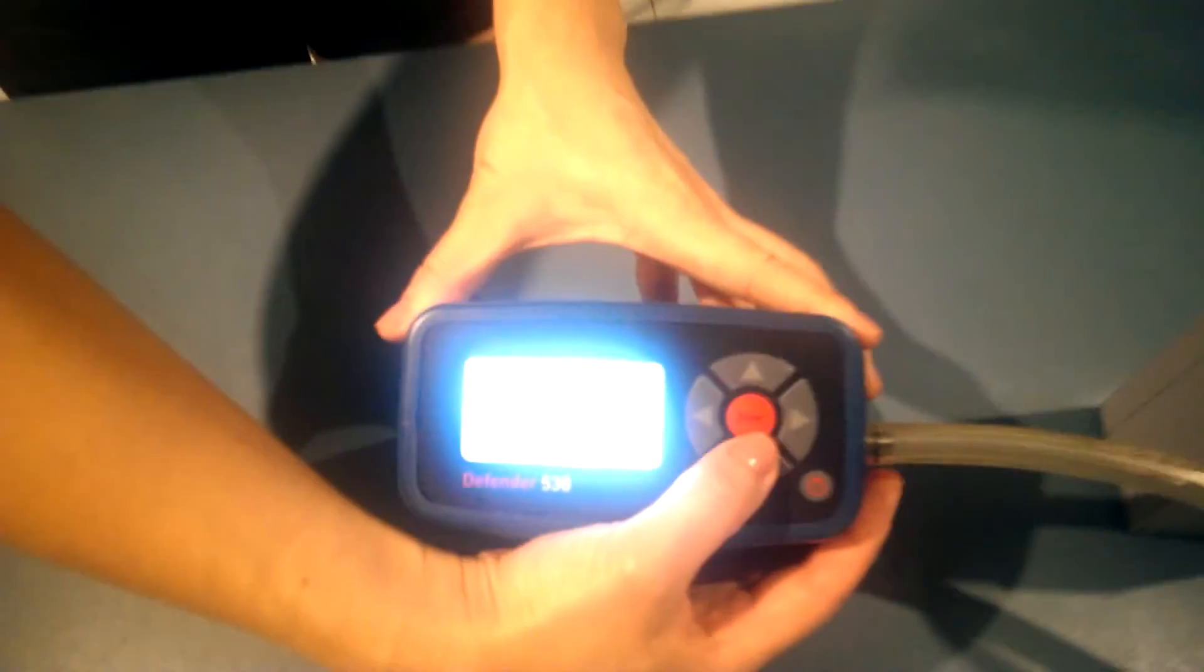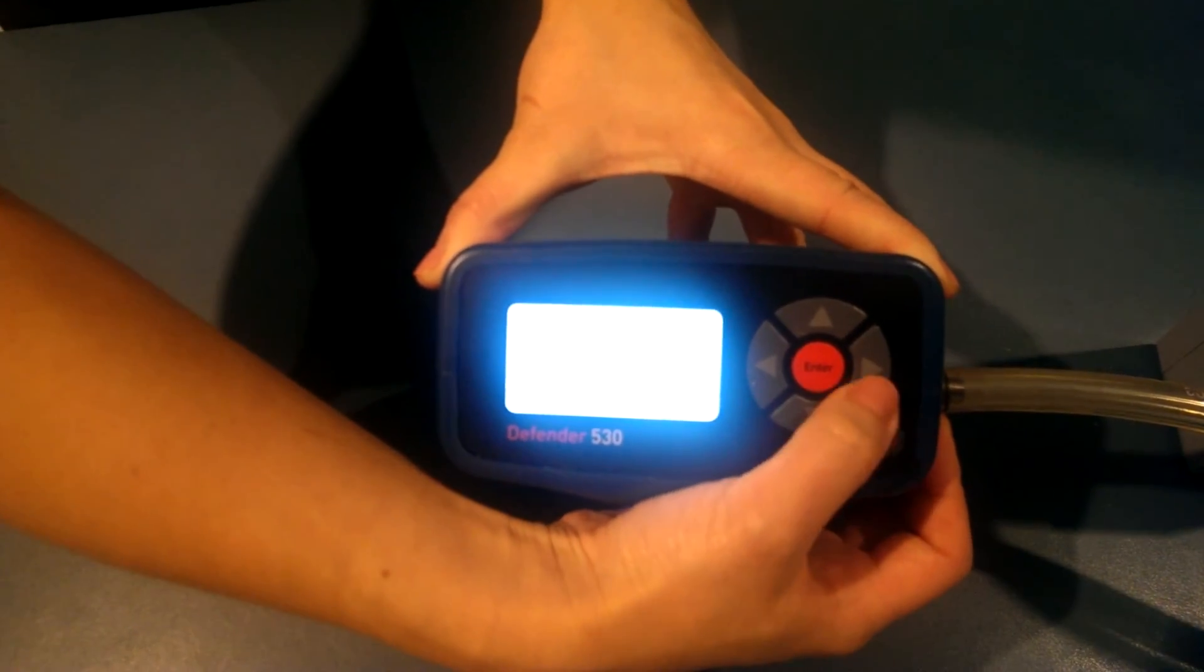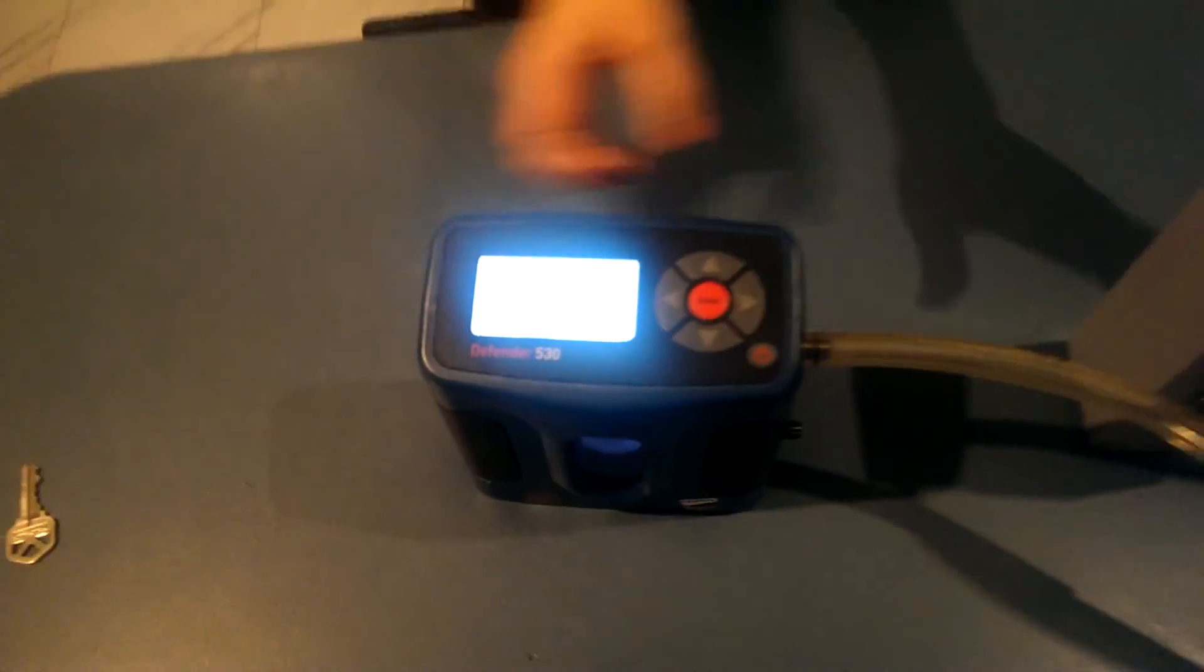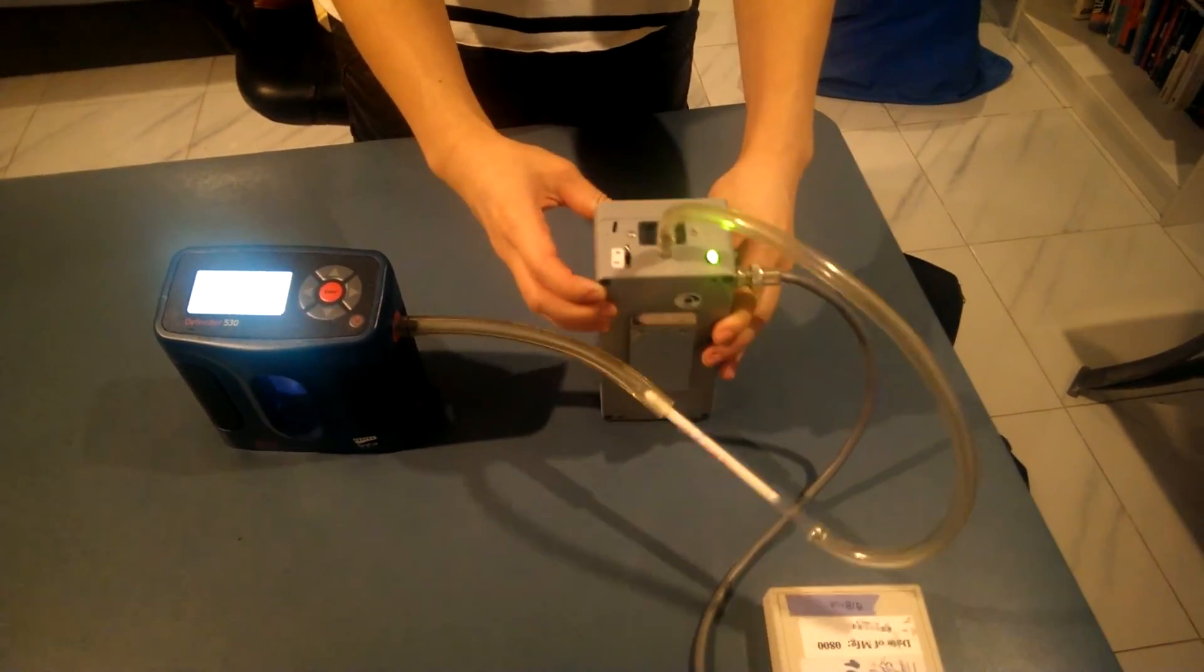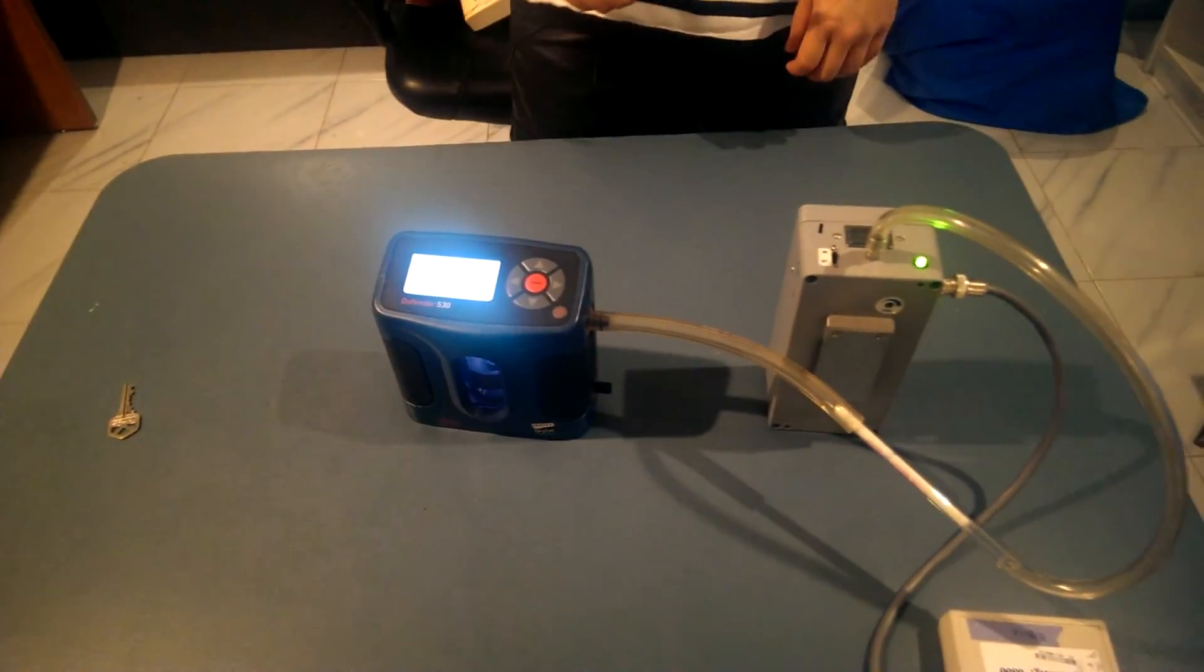On the calibrator, select measure then continuous measurement to begin measuring air flow. Turn the switch of your pump on. The display on the calibrator should read 1.5 liters per minute.